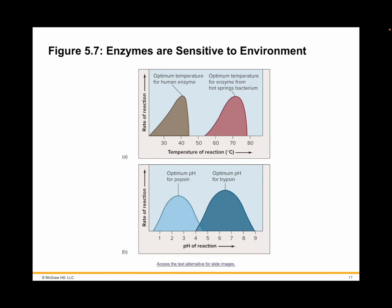The rates of enzyme reactions drop quickly at higher temperatures when the enzyme begins to unfold or denature, losing both structure and function. This is why an extremely high fever in humans can be fatal. However, enzymes found in hot springs bacteria — shown by the red curve in figure 5.7A — are more stable, allowing them to function at much higher temperatures, enabling those bacteria to live in water near 70 degrees Celsius.